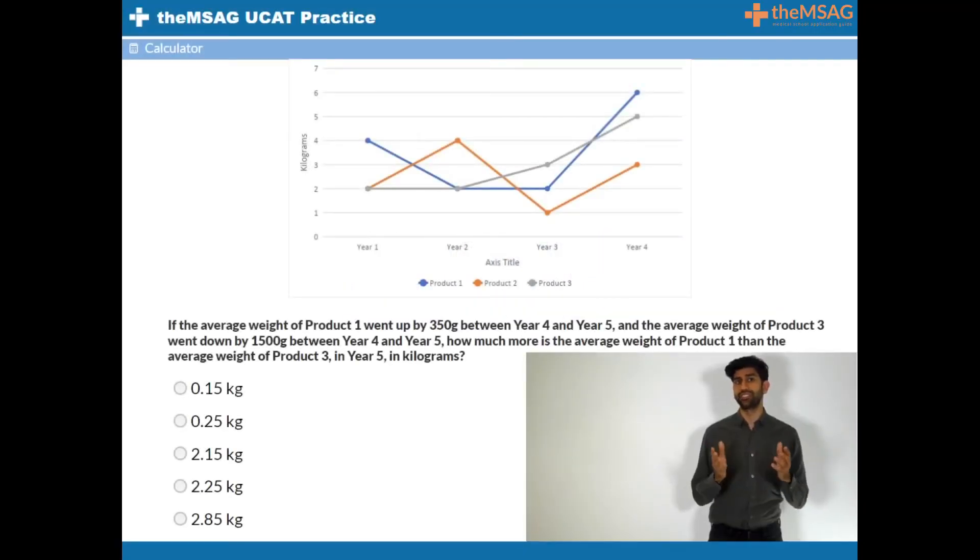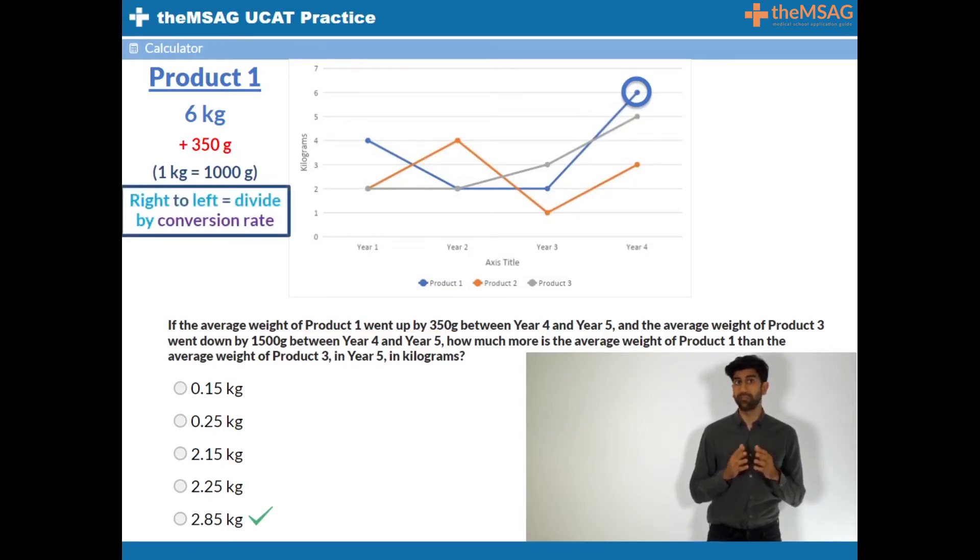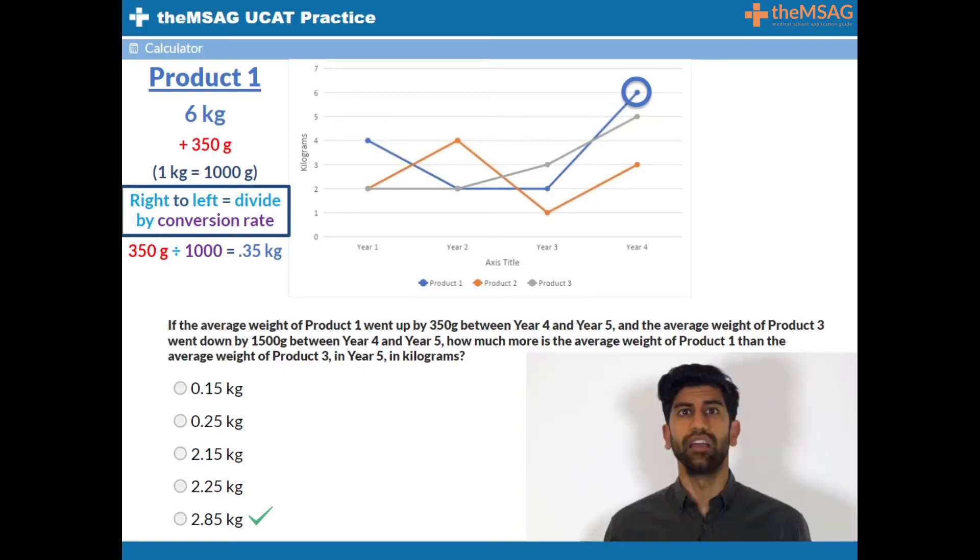Question 2. The answer is E. Product 1 in year 4 weighed 6 kilograms. This increases by 350 grams. From memory you should know that 1 kilogram equals 1000 grams. To go from grams to kilograms we go from right to left so we divide. 350 divided by 1000 equals 0.35. Therefore, 350 grams equals 0.35 kg. You may have also realized this instinctively from experience. Product 1 now weighs 6.35 kilograms in year 5.